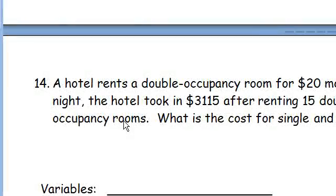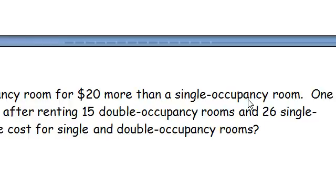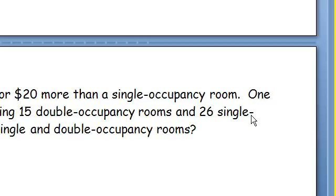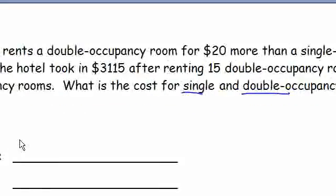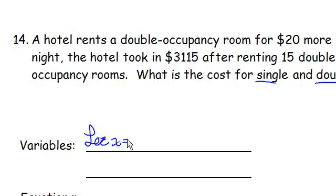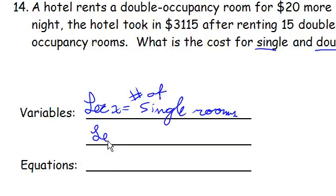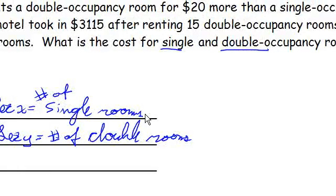A hotel rents a double occupancy room for $20 more. So we already kind of see what's going on here. $20 more than a single occupancy room. One night, the hotel took in about $3,000 after renting 15 double occupancy rooms and 26 single occupancy rooms. What is the cost for single and double occupancy rooms? Okay, those are our variables. Let x equal number of single rooms. Let y equal number of double rooms. Single rooms, double rooms.